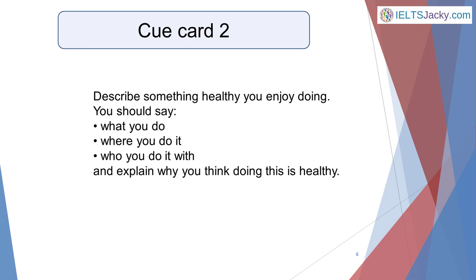Here's another example. Describe something healthy you enjoy doing. You should say: what you do, where you do it, and who you do it with, and explain why you think doing this is healthy. Again, the most important words are the first sentence: Describe something healthy you enjoy doing. This is your topic, and what you must talk about for your 2 minutes.